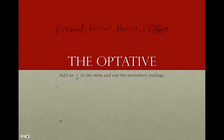By and large, the way you conjugate the optative is you're going to add an iota to the stem, and you're going to use the secondary endings. The main active endings you'll see are: -mi, -s, nothing, -men, -te, and -n.